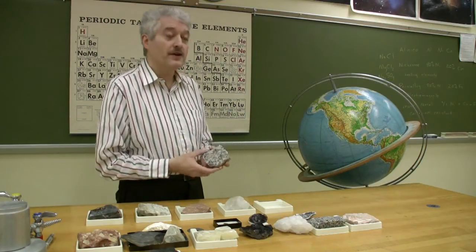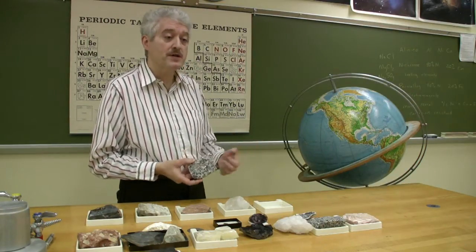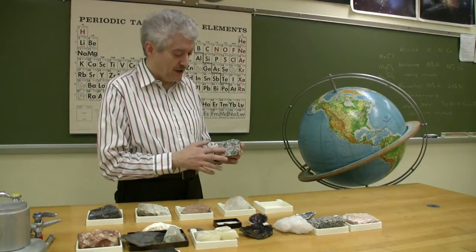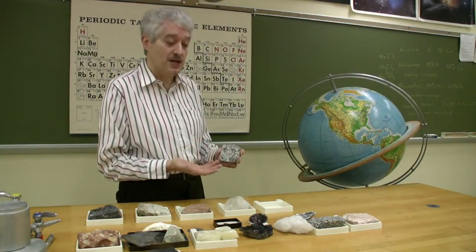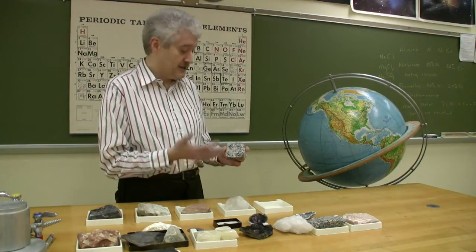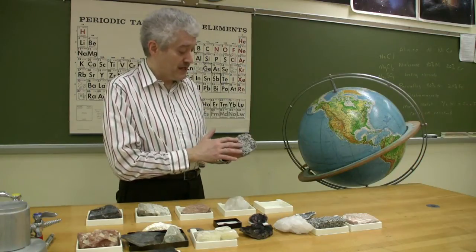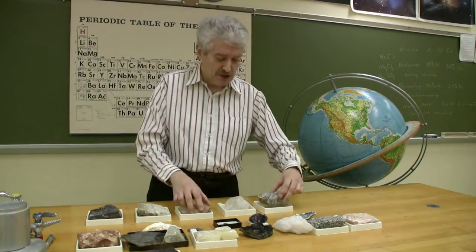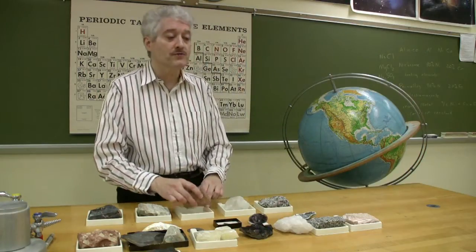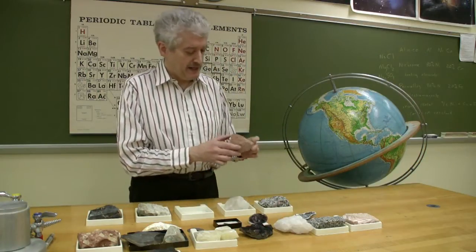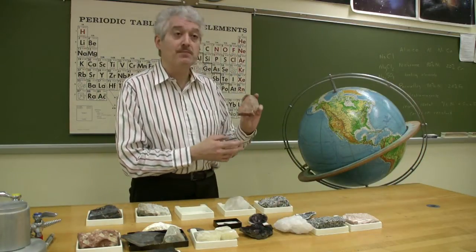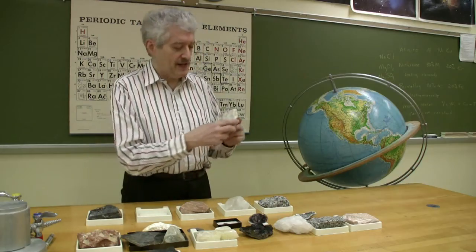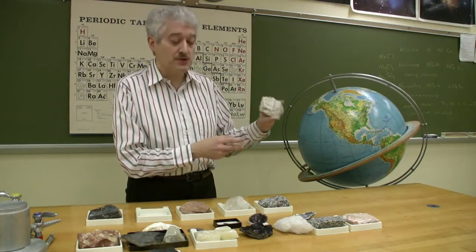Granite is of course very commonly used for monuments, facades of buildings and so forth, and if you look at a lot of granite, you'll see different colors of it. Some of it will be more pink, some of it will have very little pink in it. Here are some examples of feldspar that you would find in a granite. This is a pink feldspar, and this is an example of a white or gray feldspar.